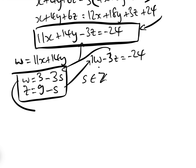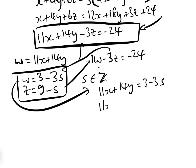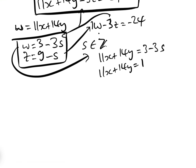Now we need to solve for W, which we've already said is 11x + 14y. So we have 11x + 14y = 3 − 3s. First of all, let's solve 11x + 14y = 1 the formal way — let's do it with the GCD. The GCD of 11 and 14: even though we know it's one, let's go through the formal process because that's going to help us produce the general and particular solutions.